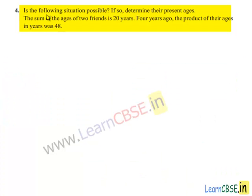Moving on to the fourth problem. Is the following situation possible? If so, determine their present ages. The sum of the ages of two friends is 20 years. Four years ago, the product of their ages in years was 48.